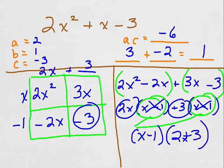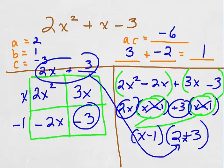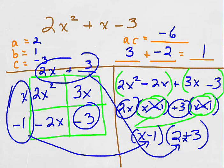And I can see that 2x plus 3 is on top of the box method and x minus 1 was on the left hand side.